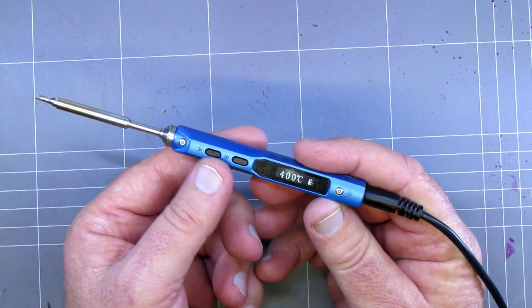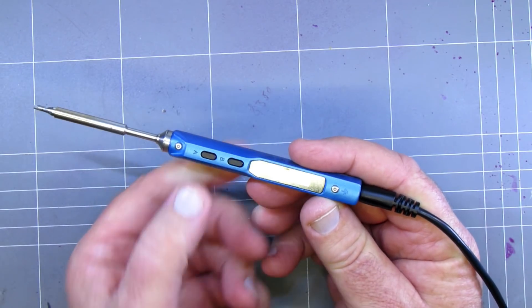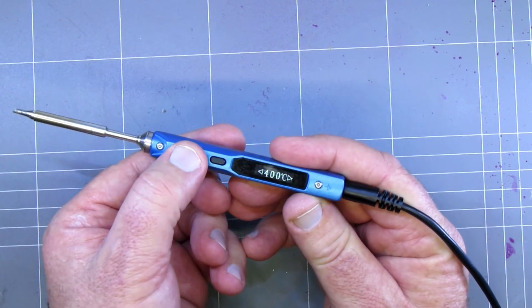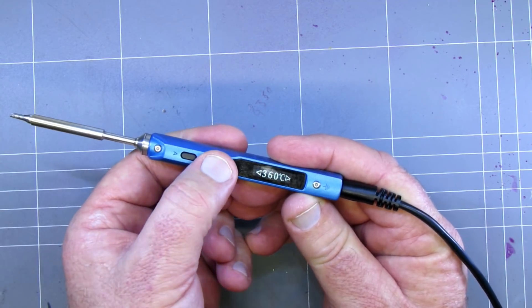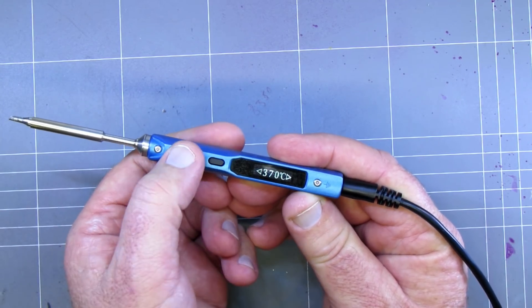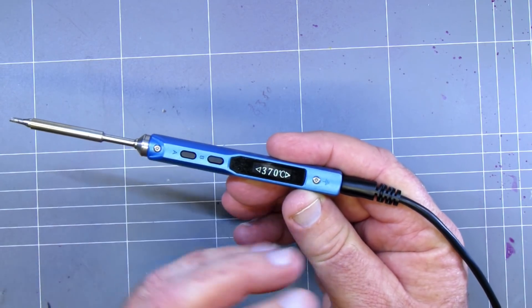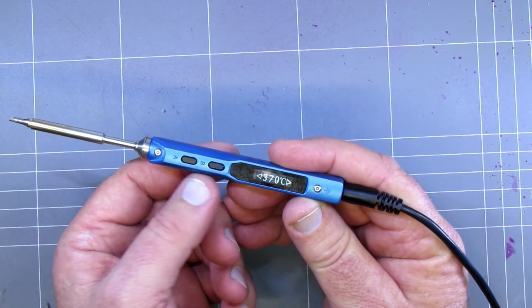Now you can also change the temperatures on this pretty easy. You hold down this button here and you can actually change it by ten degrees each way, up or down. And you can actually modify that too if you want it to go in five degree increments, you can also do that.